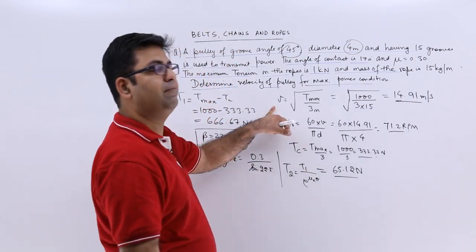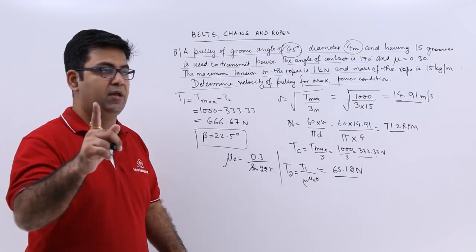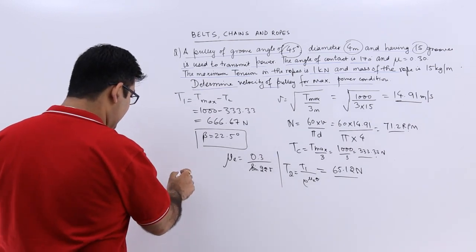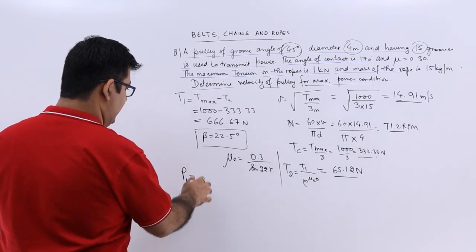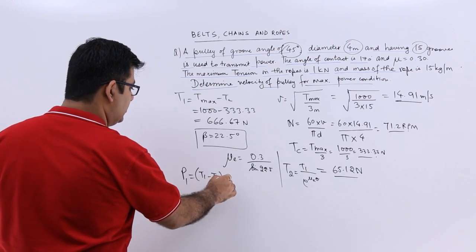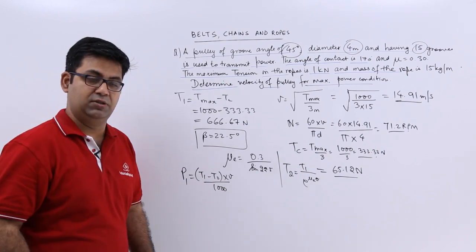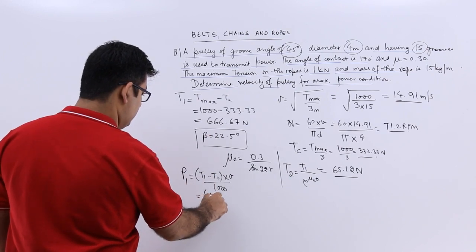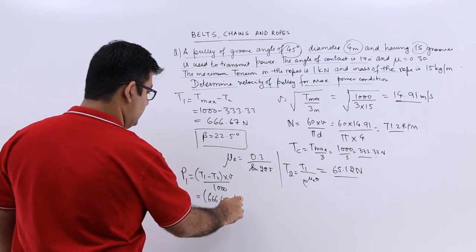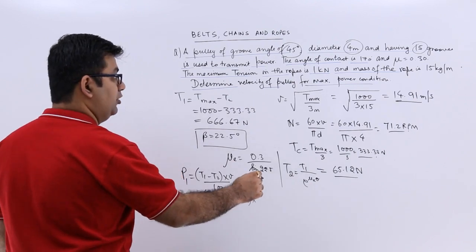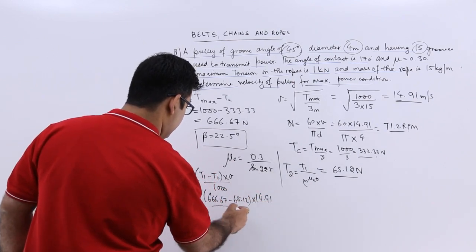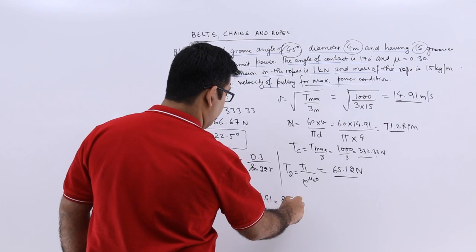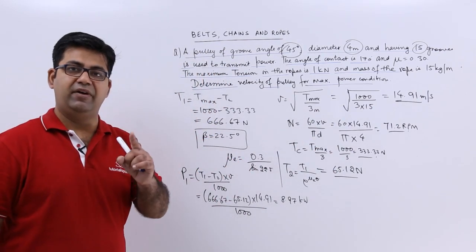We can easily find out with the help of velocity the power transmitted by one rope and you have a total of 15 grooves. So power transmitted by one groove is T1 minus T2 into velocity by 1000 that would give you kilowatts. So it will be T1 is 666.67 minus 65.12 into velocity, velocity is 14.91 by 1000 and that would give you 8.97 kilowatts. So that is the power transmitted by one rope.